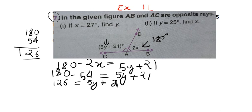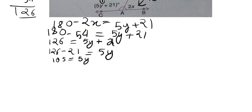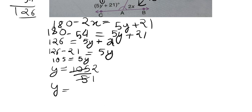See how, 126 minus 21 is equal to 5y. So, how much will be left here, 105 is equal to 5y. As we know, y is equal to 105 upon 5, so y is equal to 21, y is equal to 21 degrees. This is the answer, y is 21 degrees.